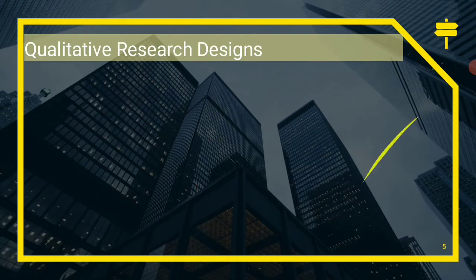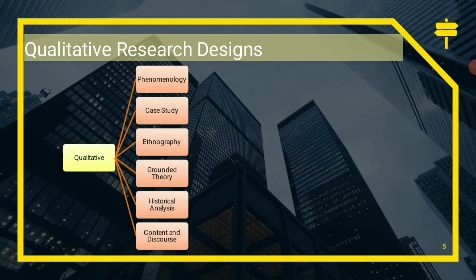Qualitative research designs basically has six designs: phenomenology, case study, ethnography, grounded theory, historical analysis, and content and discourse.